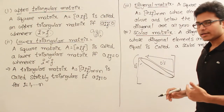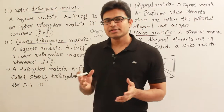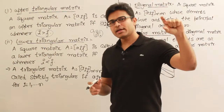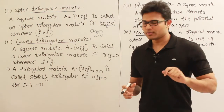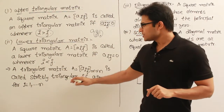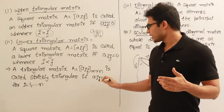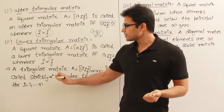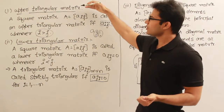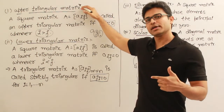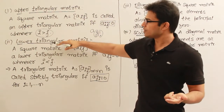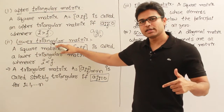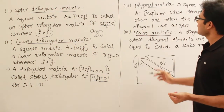If all the elements above the principal diagonal are zero, that is called lower triangular. In case a matrix is either upper or lower triangular and the principal diagonal elements also happen to be zero — a_ii = 0 — then that is called a strict triangular matrix. So if even the diagonal elements are zero in an upper triangular matrix, I can call it strictly upper triangular; and in a lower triangular matrix, if the principal diagonal elements are also zero, I can call it strictly lower triangular.